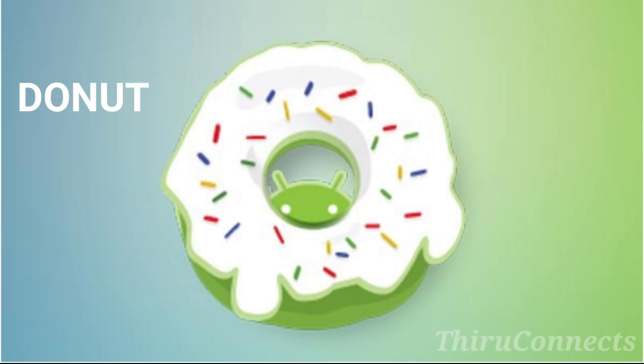This is Android 1.6, Donut, released September 15, 2009. This version introduced CDMA technology support and a battery indicator improvement.